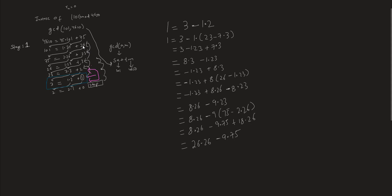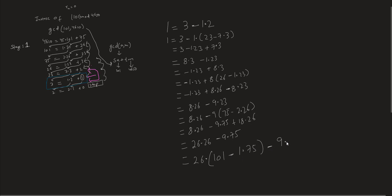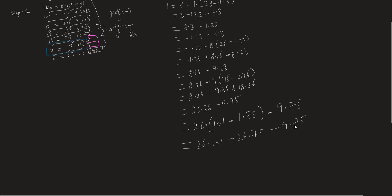Moving backwards again, we represent 26 using 4620 = 45×101 + 75... wait — 101 = 1×75 + 26, so 26 = 101 - 1×75. Substituting: 1 = 26×(101 - 1×75) - 9×75 = 26×101 - 26×75 - 9×75. This simplifies to 26×101 - 35×75.